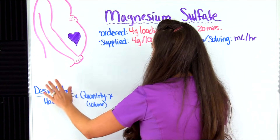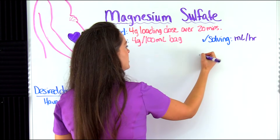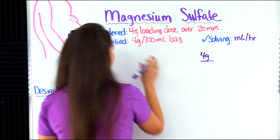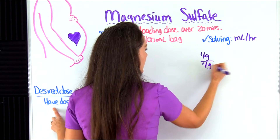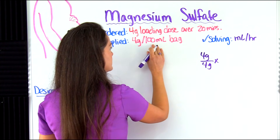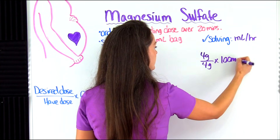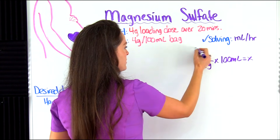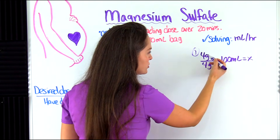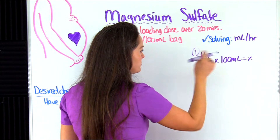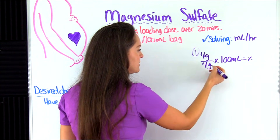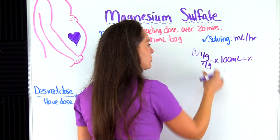So the desired dose is the four gram dose. Four grams is what they desire for the patient over our have dose — we have a four gram dose — and we multiply that by the quantity, which is the volume: 100 mLs. That equals X. Whenever you're solving these types of problems with desired over have, you always have to make sure the units of measurement match up. Some problems might have micrograms and milligrams that need to be converted — but here they're the same, so we can go ahead and work the problem.